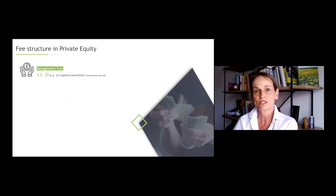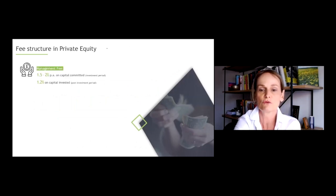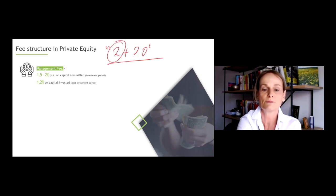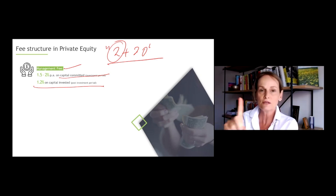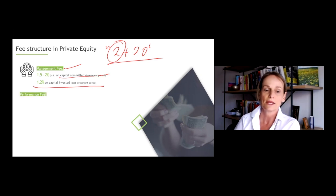Now, fee structure in private equity is usually casually referred to as 2 plus 20. So 2 being the management fee, 2% per annum on capital committed, dropping down to about 1.2% on capital invested as the money is being deployed. So management fee is your first layer of fees.